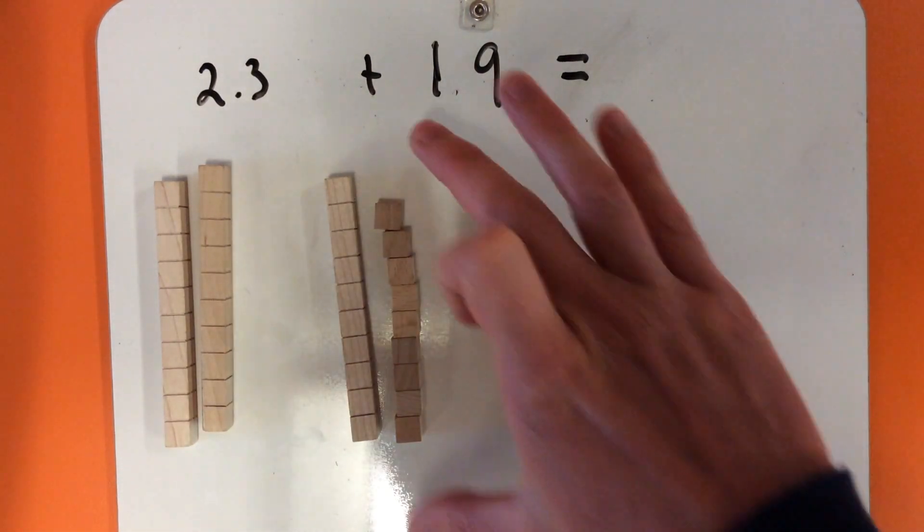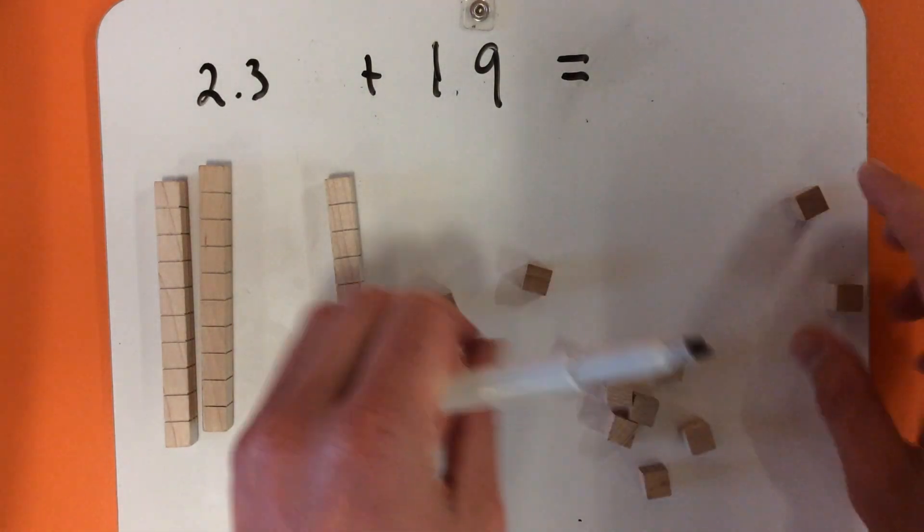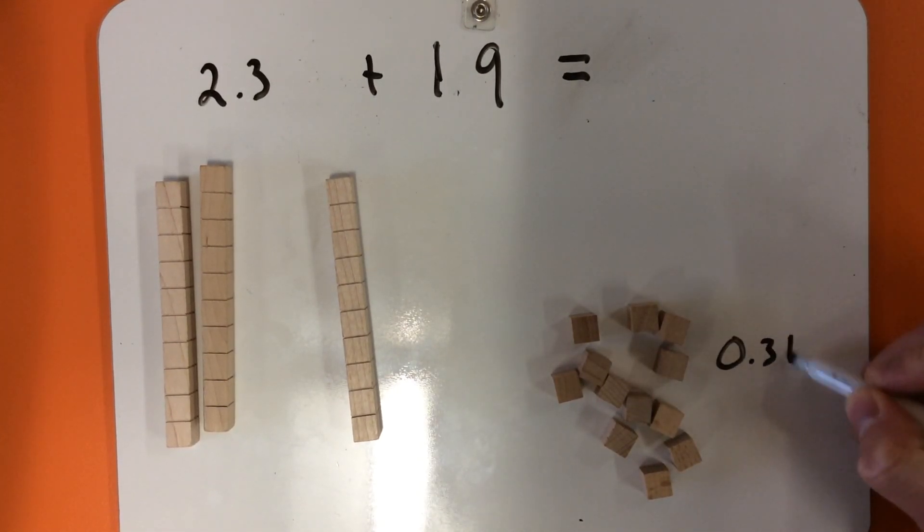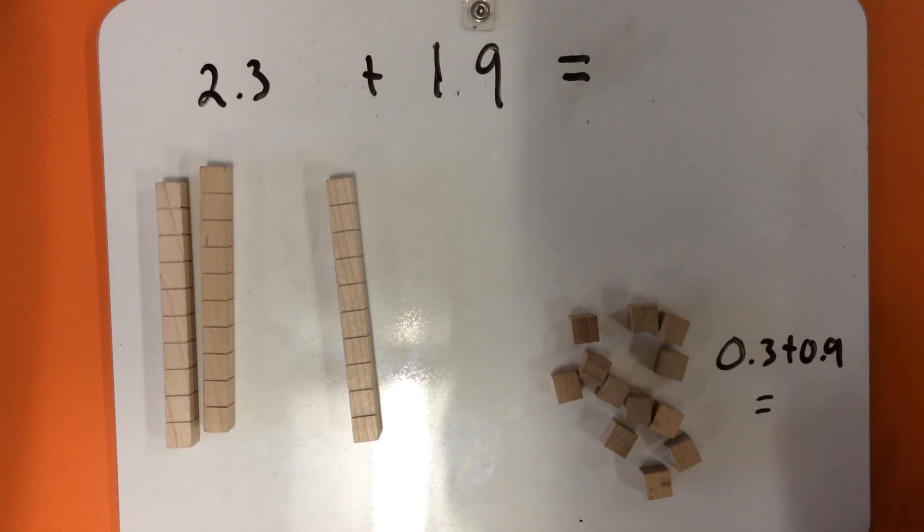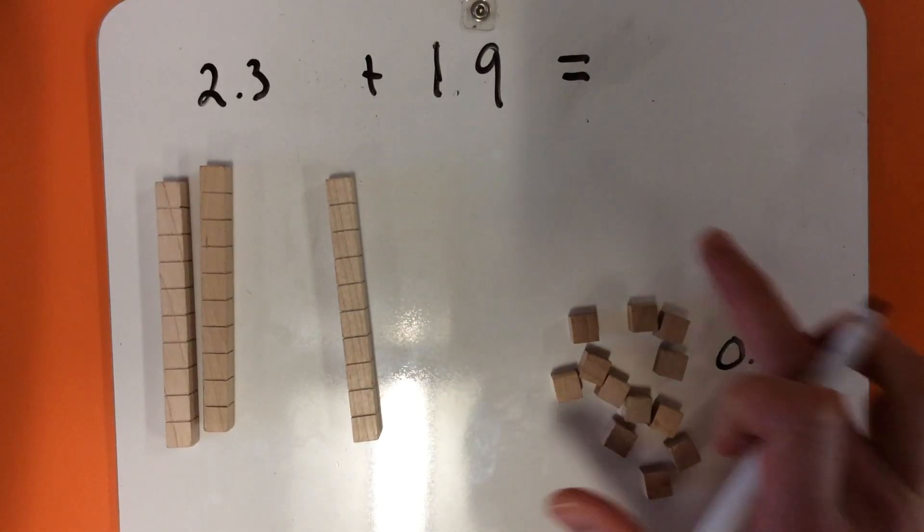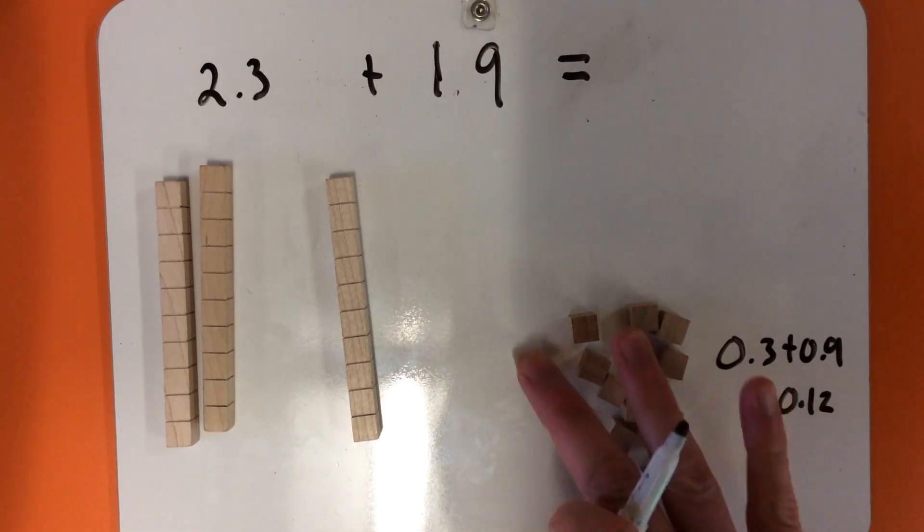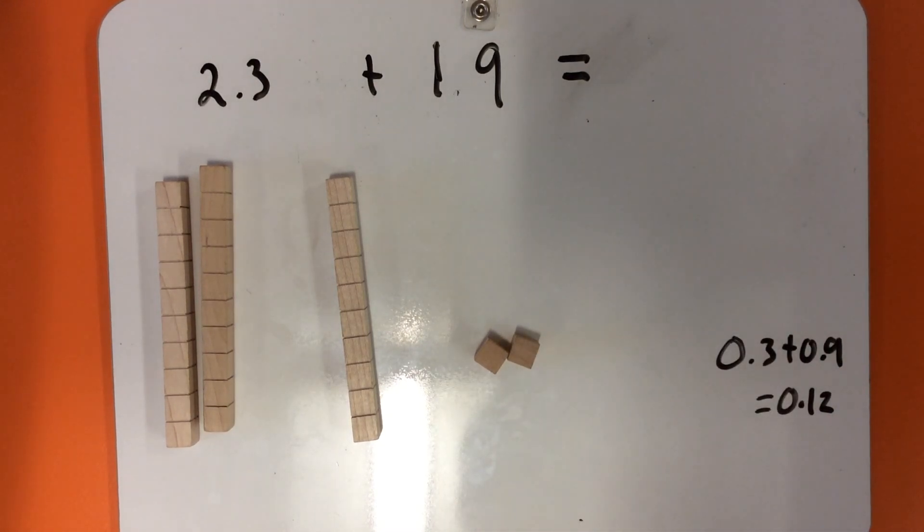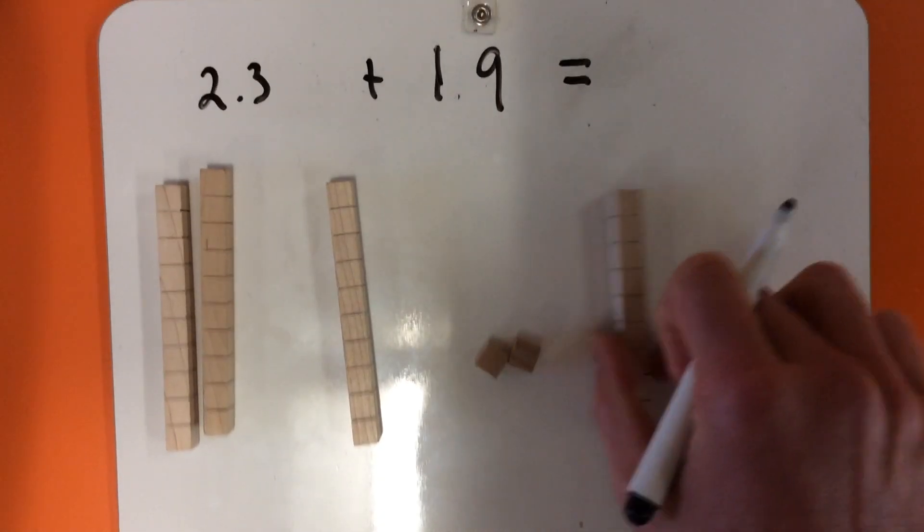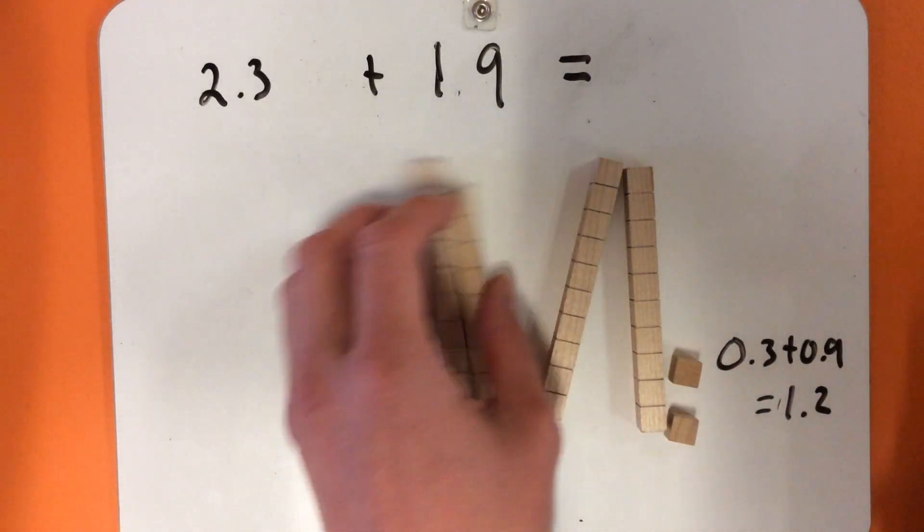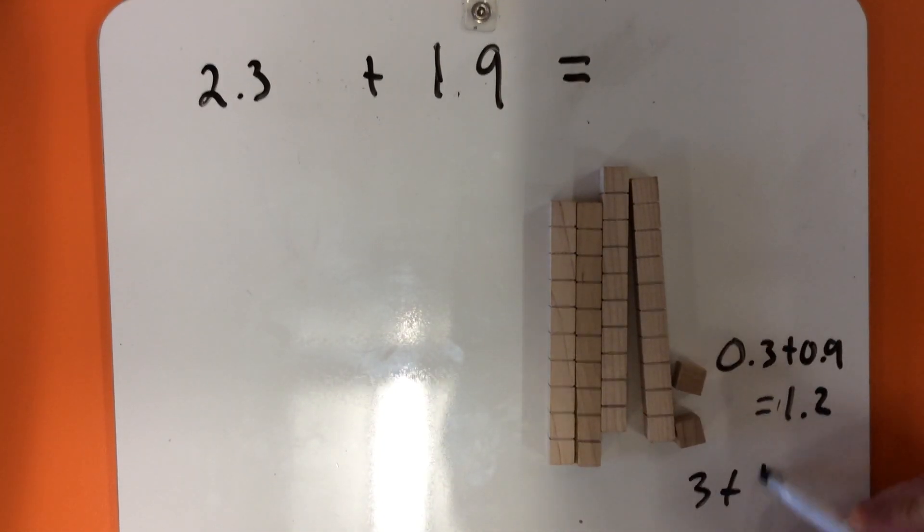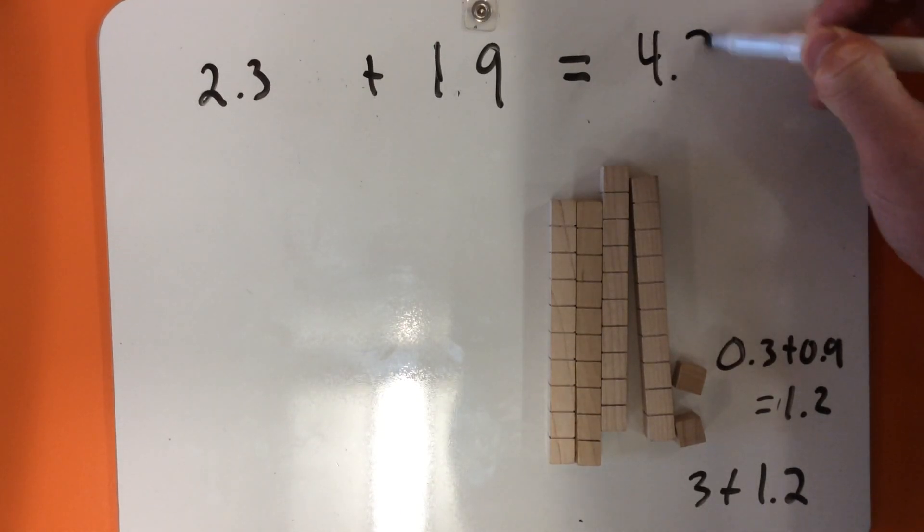What I'm going to do is add the tenths first. So 0.3 plus 0.9 equals 12 tenths. But that is not the right way to write it. When you have 10 tenths, you effectively change those 10 for one of these. So it's actually 1 and 2 tenths. Then I've got my other three there, so my 2 and my 1. So I've got 3 plus 1.2, and that is 4.2.